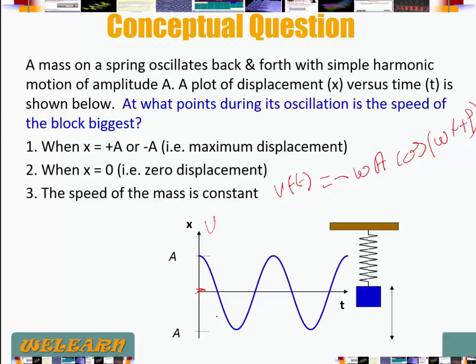So this starts to be x positive. Velocity is going to be here. 0 here. Maximum here. 0 here. And so on. When x is equal to 0.